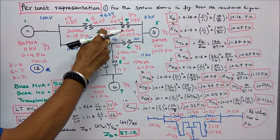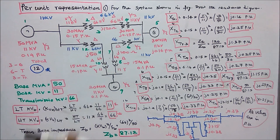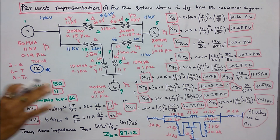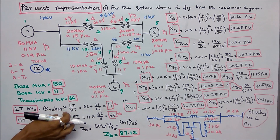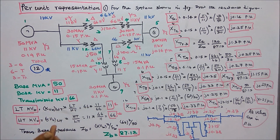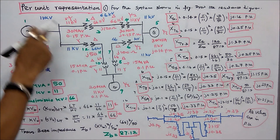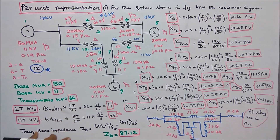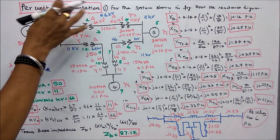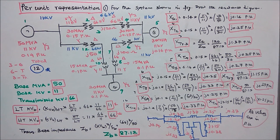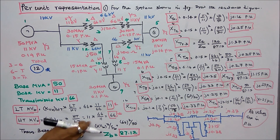The transmission voltage is 66 kV throughout. The low voltage KV base is chosen as 11, and the high voltage KV base is calculated as: low voltage KV base × (HT rating / LT rating) = 11 × (66/11) = 66 kV. The chosen values are marked in green, given values in red, and chosen base KV values in blue.